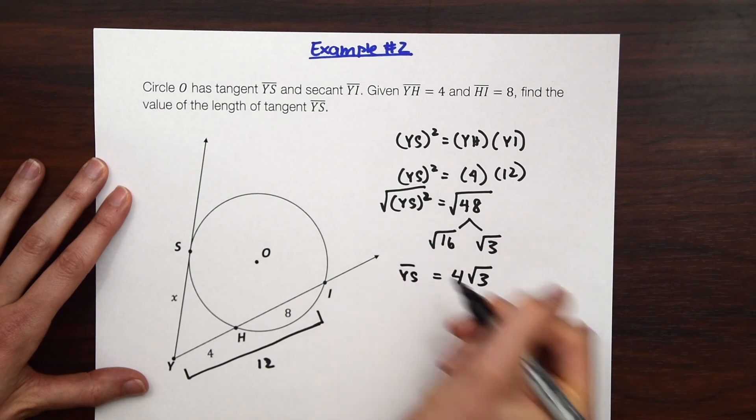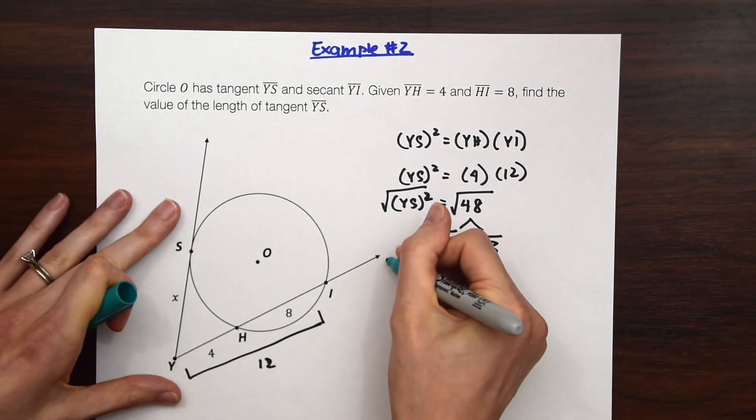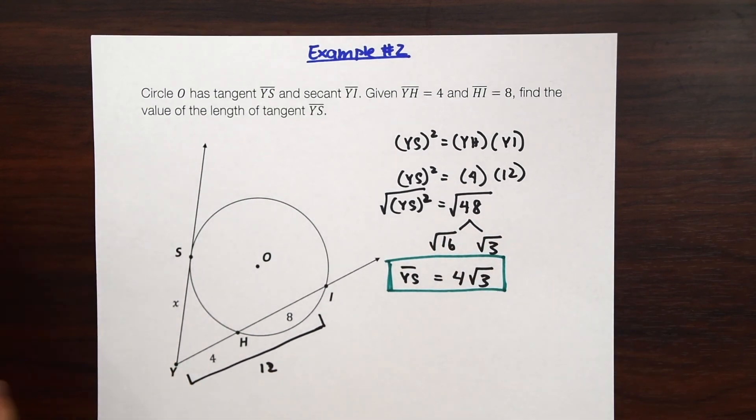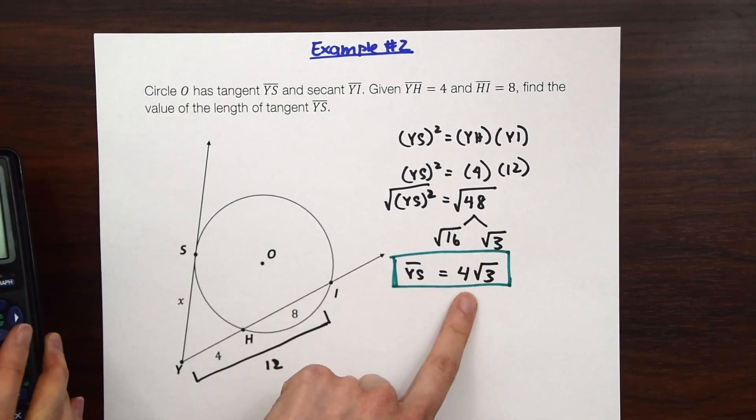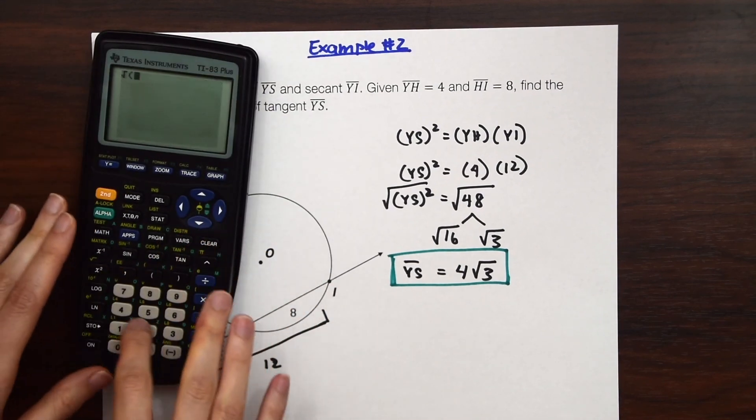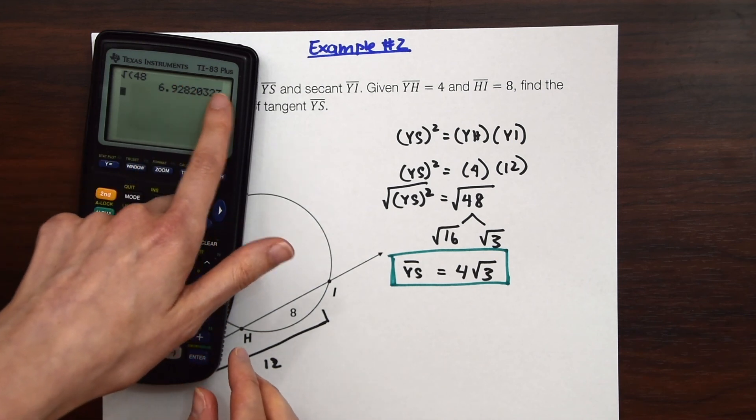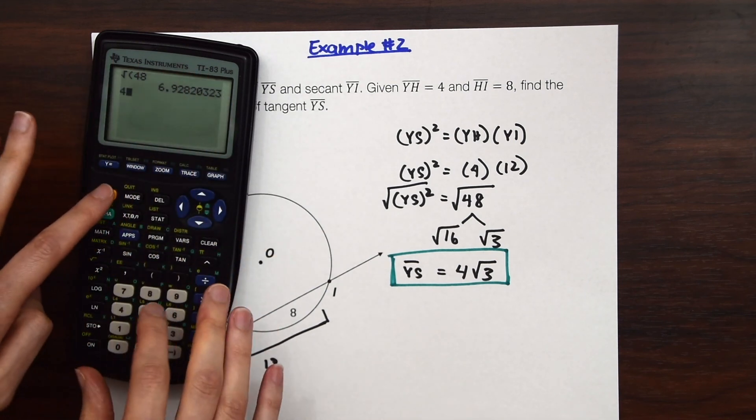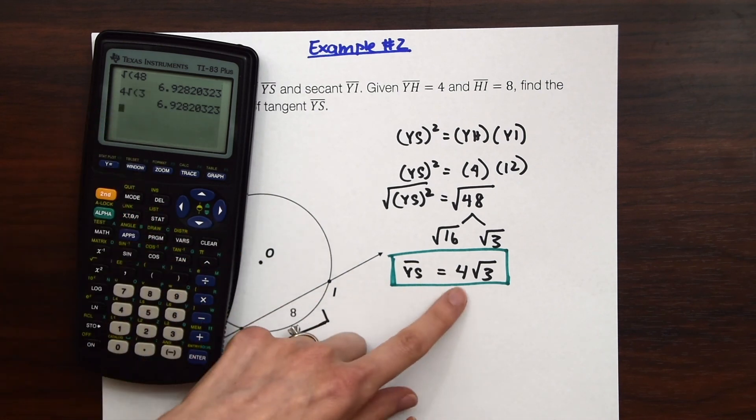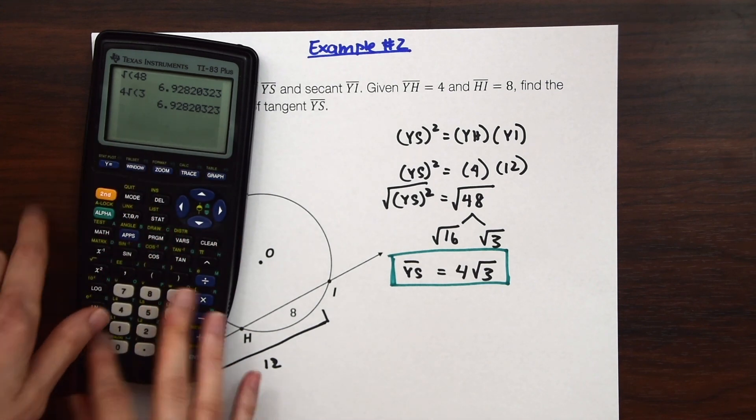So this will just be 4 radical 3. So YS is equal to 4 radical 3. And that's our answer. And if you're unsure of how to simplify this and you want to double check your answer you can always plug this into your calculator. So if you do radical 48 we'll get this 6.928 number. And then if you put in the reduced number 4 times radical 3 you'll notice we get the same number. So we know that we've reduced correctly.